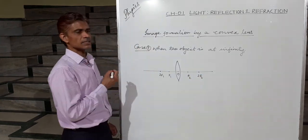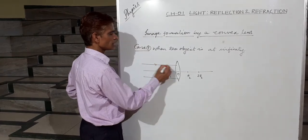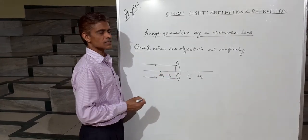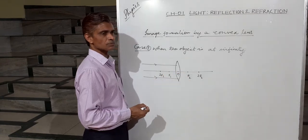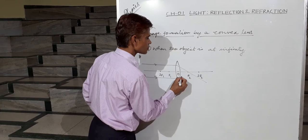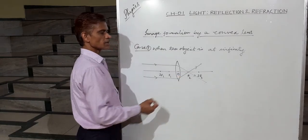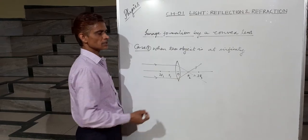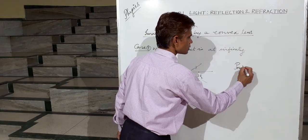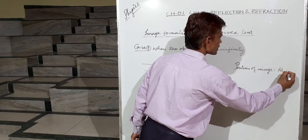The object is at infinity, so parallel rays come and fall on the lens. According to rule number 1, rays parallel to the principal axis after refraction pass through the focus on the other side of the lens. So these rays will pass through focus F2, and since these are real rays, a real image is formed at F2, the second focus. Position of image is at F2.